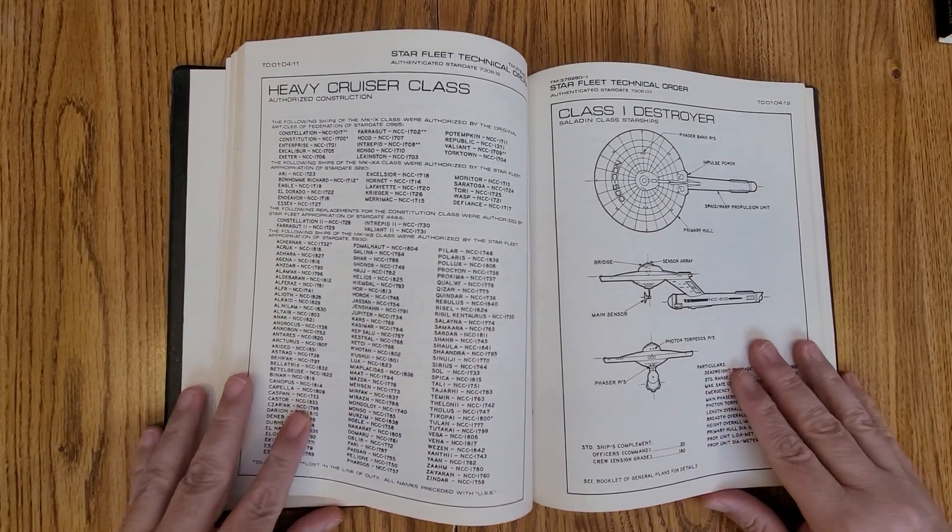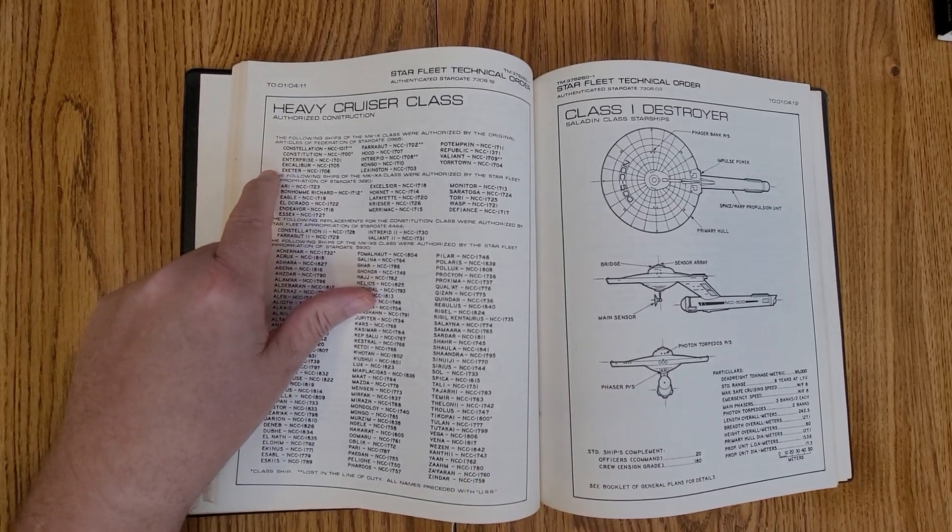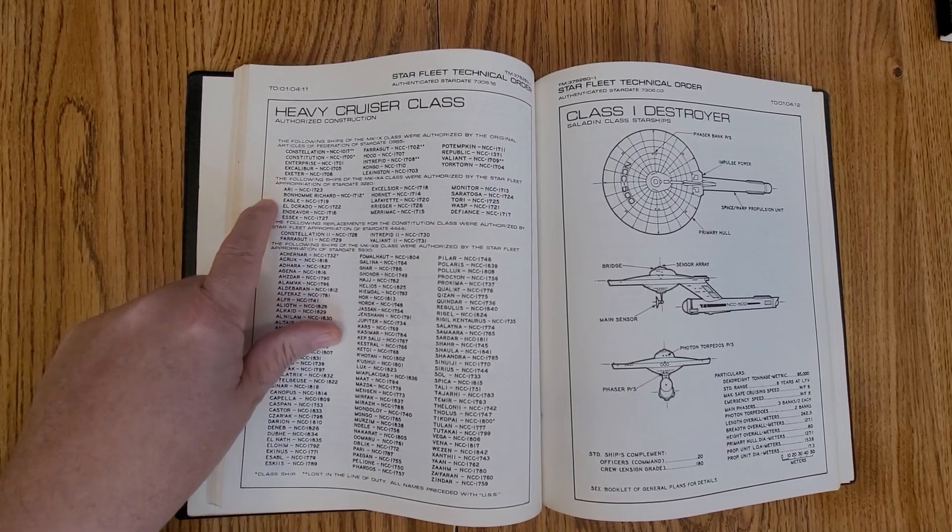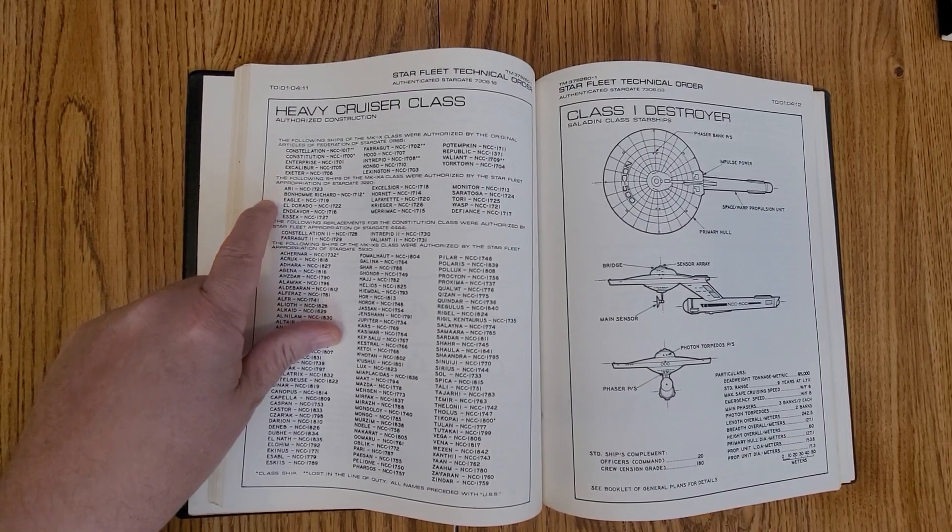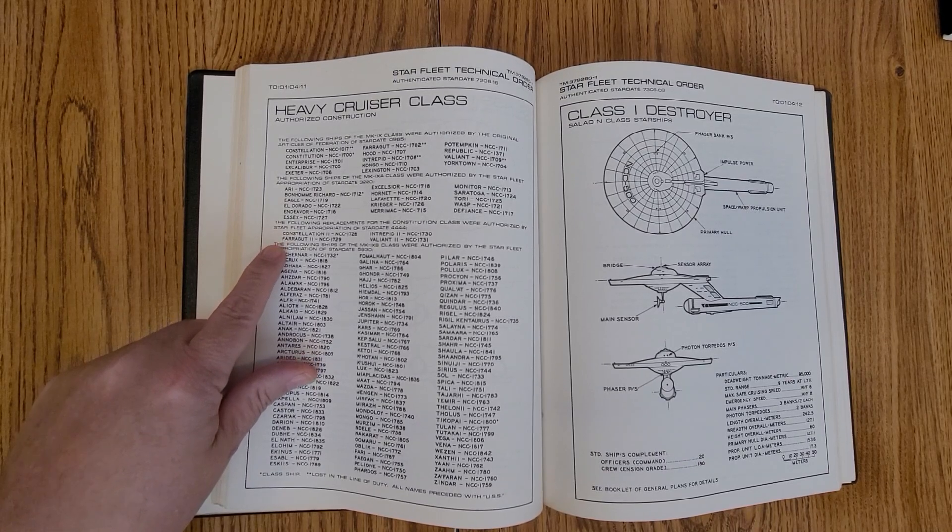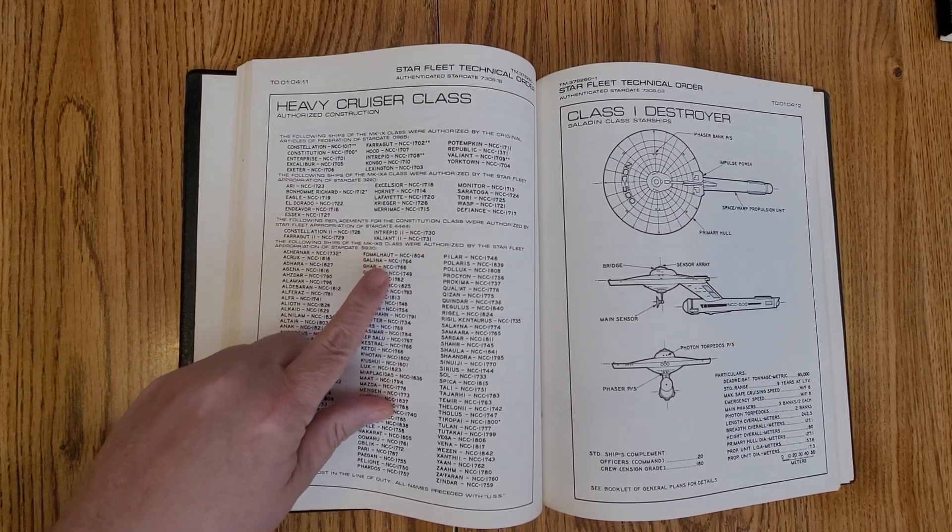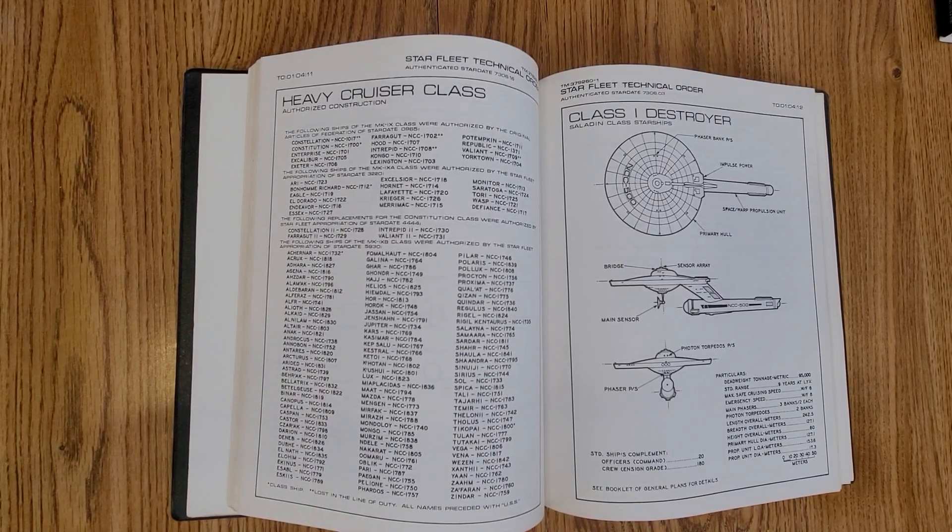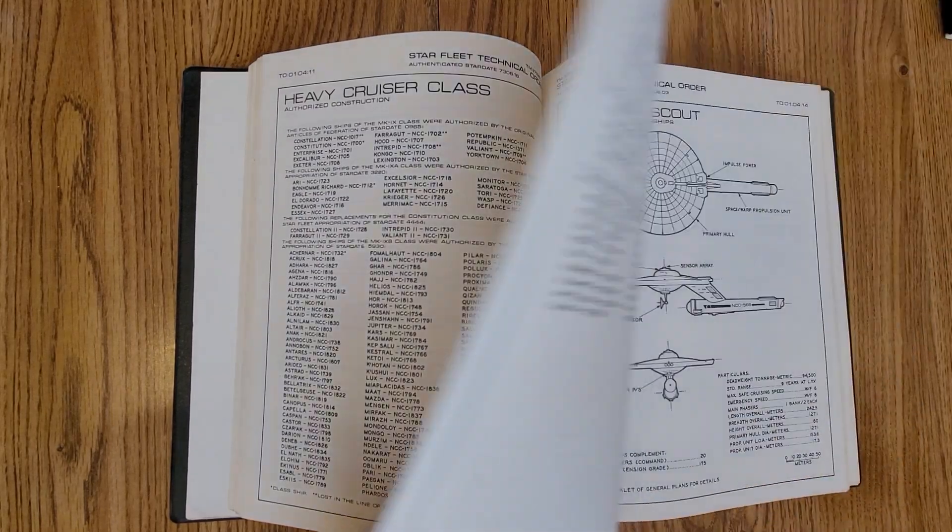And the thing that I think is fantastic is it actually goes through and lists what the original constitution classes were by name. And then they were talking about the Mark 9A classes that were authorized, and then it goes into the replacements that were authorized by Starfleet. And then it talks about the B classes that were authorized by Starfleet appropriation. So it does list a lot of the numbers of the different ships.